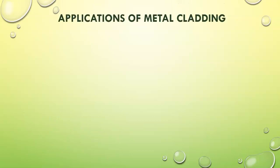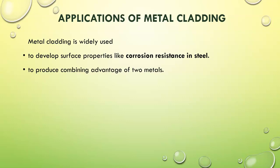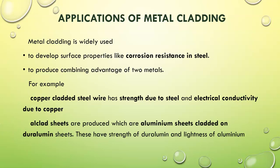Let us see the applications of metal cladding. Metal cladding is widely used to develop surface properties like corrosion resistance in steel, and most often it is used to produce the combined advantages of two metals. Copper-cladded steel wire has strength due to steel and electrical conductivity due to copper, which cannot be obtained by alloying copper and steel. Similarly, L-clad sheets are produced which are aluminum sheets cladded on duralumin sheets — these have the strength of duralumin and the lightness of aluminum.